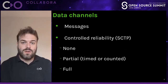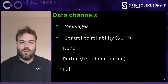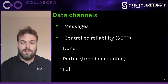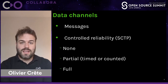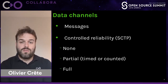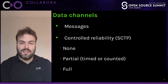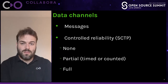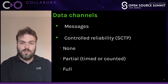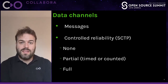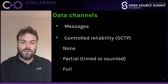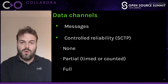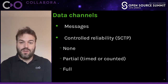Then there's a data channel. WebRTC also has a separate way to send arbitrary data from the browser application. This data is sent as messages, and these messages can have different levels of reliability. It can go from full ordered reliability — such as you would get from TCP — to fully reliable but unordered, to partial reliability where a packet is retransmitted up to a certain limit (either a number of retransmissions or a timeout), and then fully unreliable. This is controlled by the application.